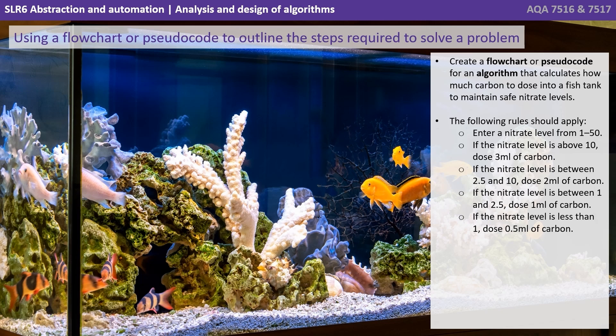So let's have a go at creating a flowchart or pseudocode for an algorithm that calculates how much carbon to dose into a fish tank to maintain safe nitrate levels. We're going to ask the user to enter a nitrate level from 1 to 50. If the nitrate level is above 10, we want our system to dose 3 millilitres of carbon.